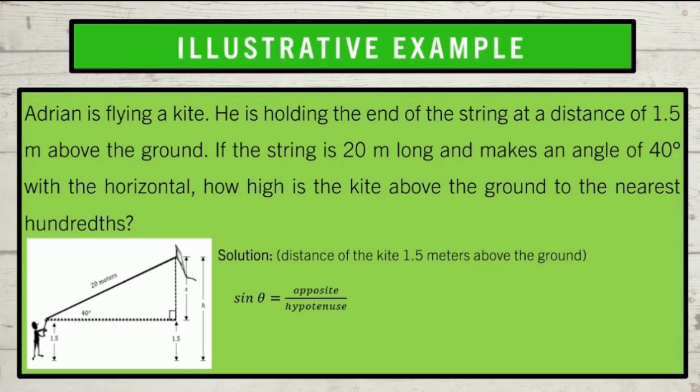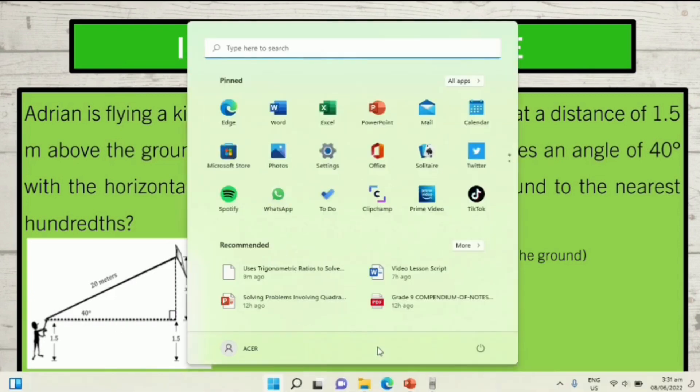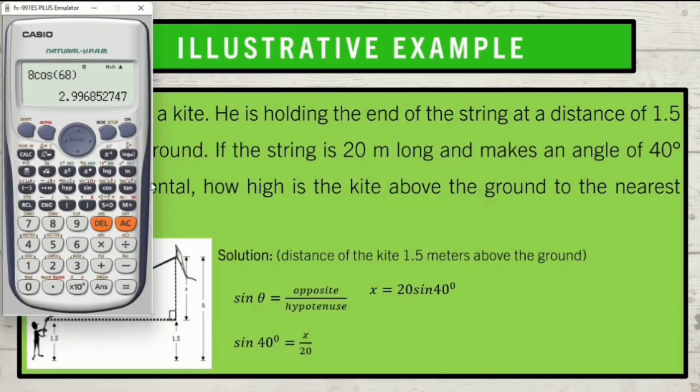For our solution, let us now substitute the given values to the formula. We have sine 40 degrees is equal to x over 20 meters. Can you follow? Very good! To get the value of x, apply cross multiplication. We have x is equal to 20 meters times sine 40 degrees. Now, using your calculator, just type 20 sine 40 close parenthesis and press equal. And we will get the answer 12.86 meters.